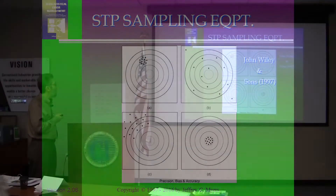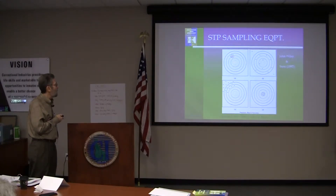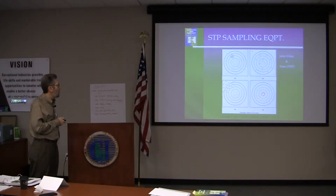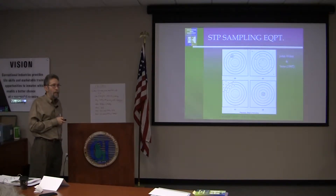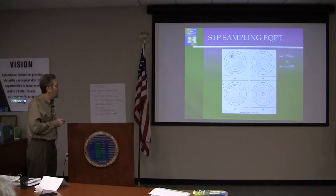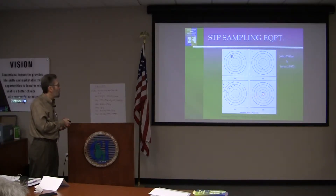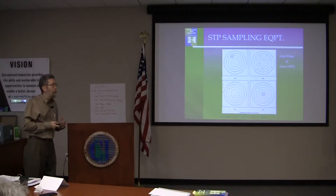The Texas sharpshooter analogy represents the concept of precision, accuracy, and bias. Looking at the diagrams: one shows very high precision but not very accurate — the cluster of bullet holes is away from the bullseye. Another shows neither accurate nor precise, with samples all over the place. The ideal is precise data that always represents the true value, similar to a normal distribution where the mode and mean are the same thing.